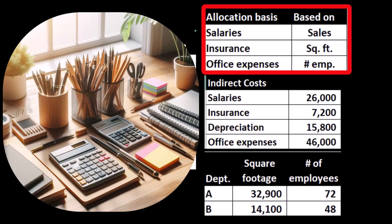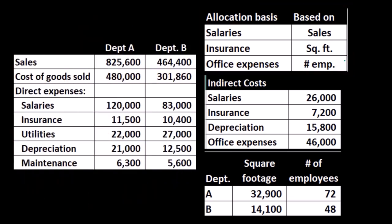The best basis we can use to make a ratio analysis to allocate our costs most appropriately can change from indirect expense to indirect expense, and it also changes with regards to how much time we want to put in place to make these allocations. These are going to be our bases: salaries is going to be based on sales, insurance is going to be based on square footage, and office expenses is going to be based on the number of employees.